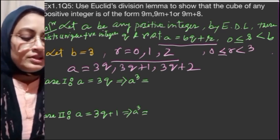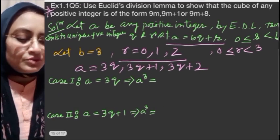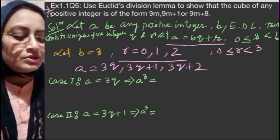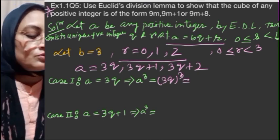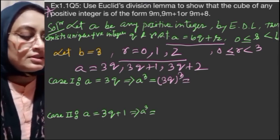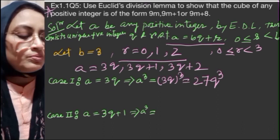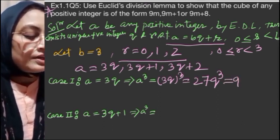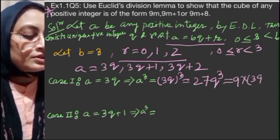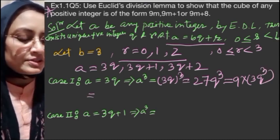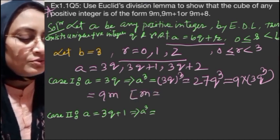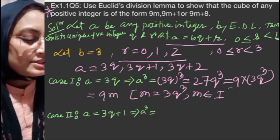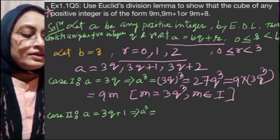Case I: If a equals 3q, where r equals 0. A³ equals (3q)³ which equals 27q³. This is equal to 9 times 3q³, which equals 9m, where m equals 3q³ and m is an integer. So this proves case I.